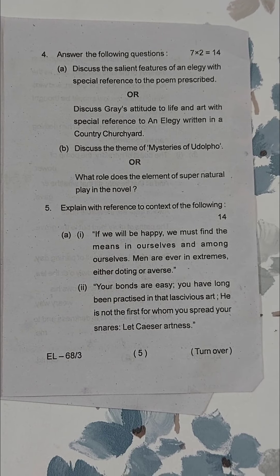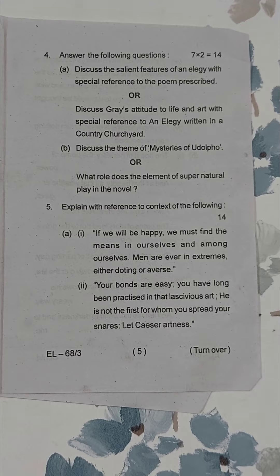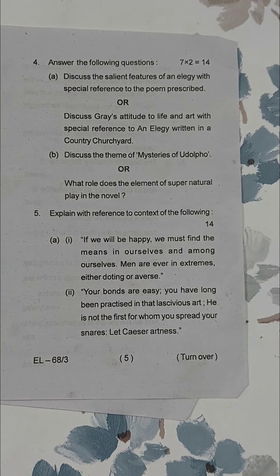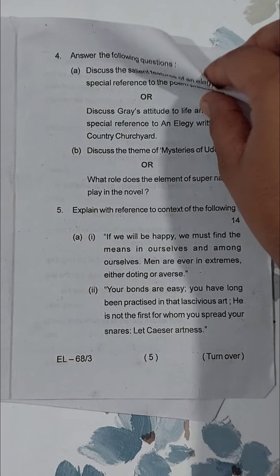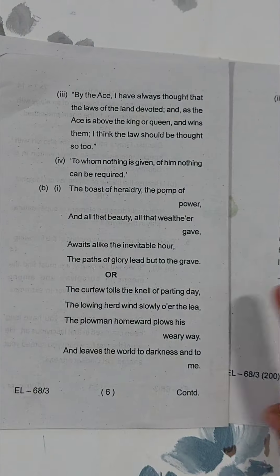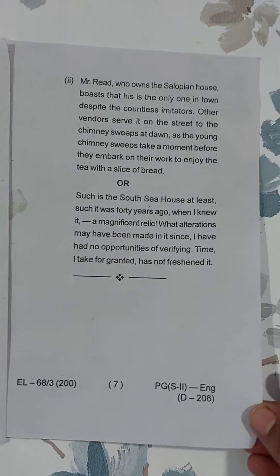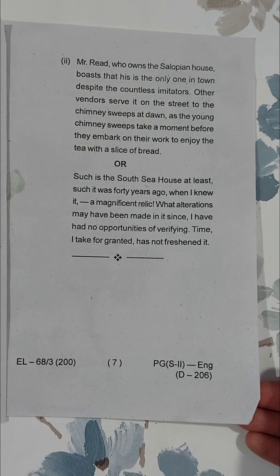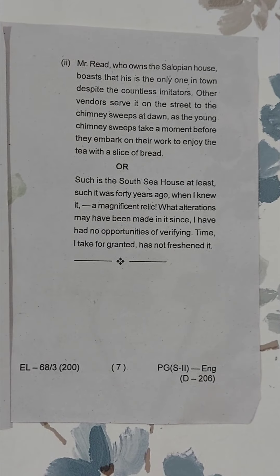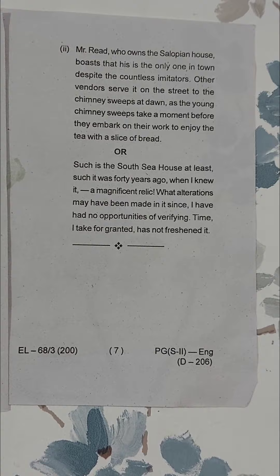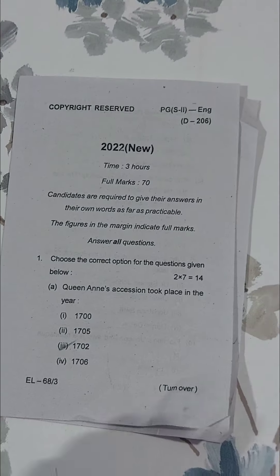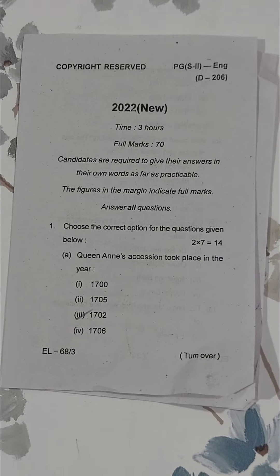Up next we have question number five where you have to answer reference to the context questions. Students who have studied the book in detail can easily answer them, and the rest of the students can use their creativity in the exams. This is page seven and the last page. So that is it about paper number six.